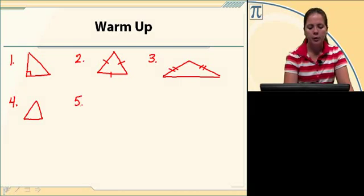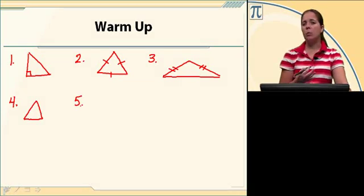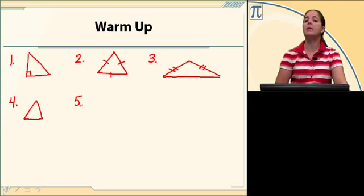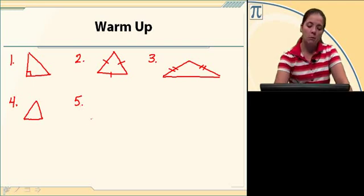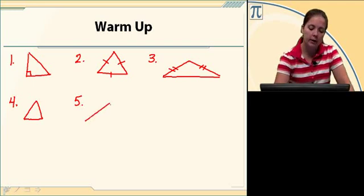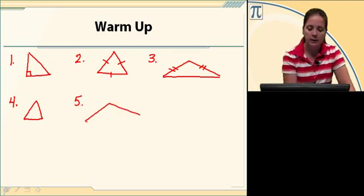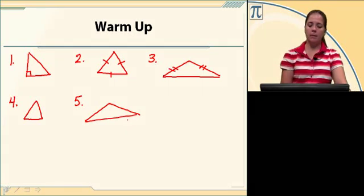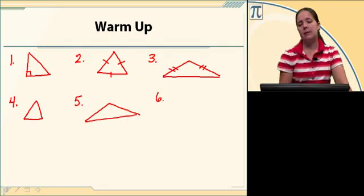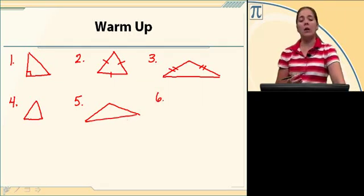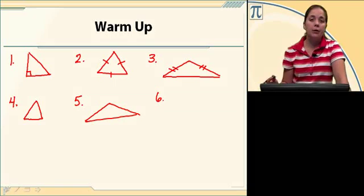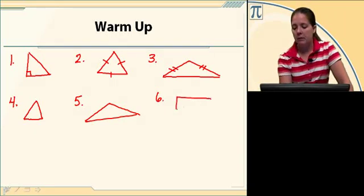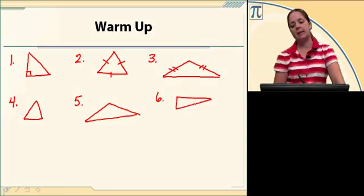An obtuse triangle means that at least one of those angles is obtuse, or one of those angles is more than 90 degrees. So there's an example of an obtuse triangle. And our last one, scalene — scalene is just saying that none of the sides are congruent. So there's an example of a scalene triangle.